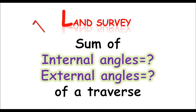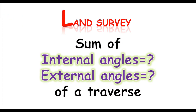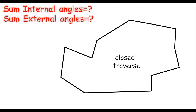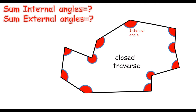Alright, so now how can we determine the internal and external angles of a traverse — I mean the sum of internal and external angles. Before calculating them, let's understand what these are. The sum of internal angles means all those angles which are forming inside of a traverse at its vertices. The sum of internal angles means you add all these internal angles forming inside a traverse at its vertices.